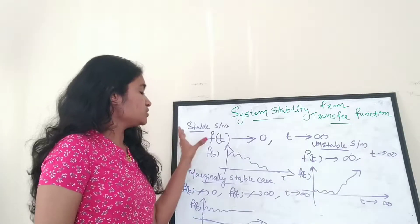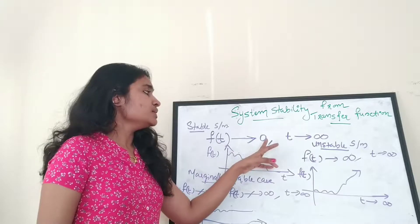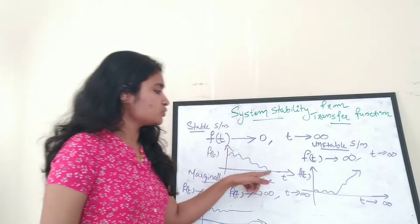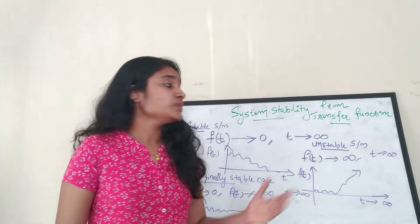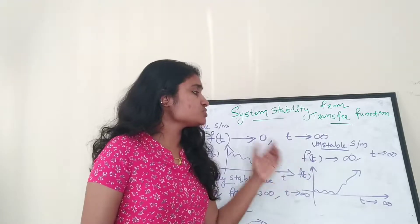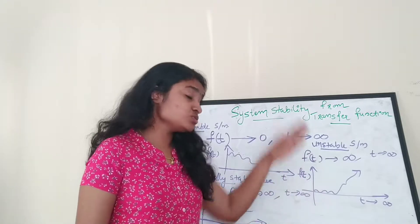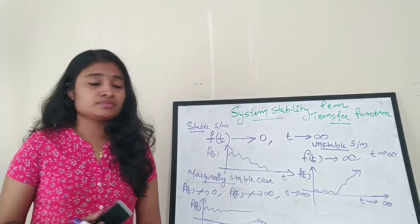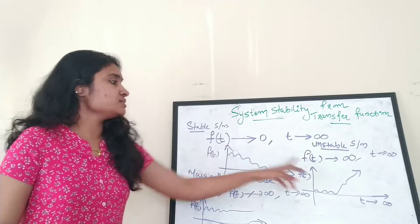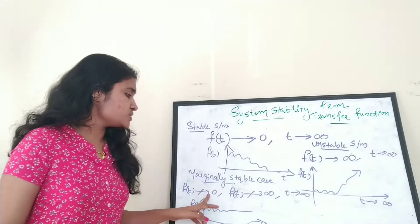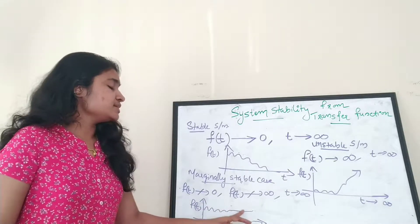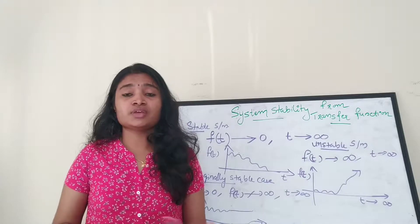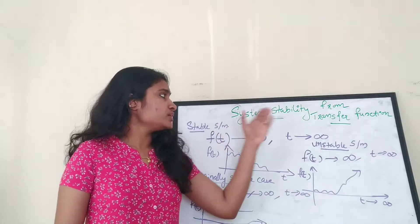These are the three cases we must consider for system stability. First, the stable case: f(t) should tend to zero as time goes to infinity, and the graph settles to zero. For an unstable system, the impulse response f(t) tends to infinity as time tends to infinity. For a marginally stable system, f(t) is not going to zero and not going to infinity — it settles at some constant value as time tends to infinity.